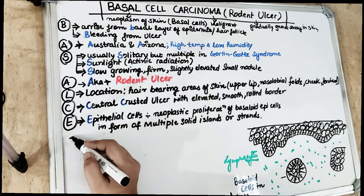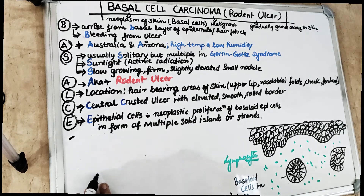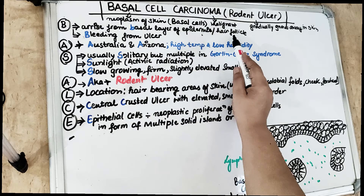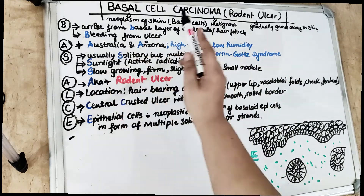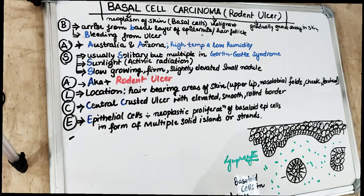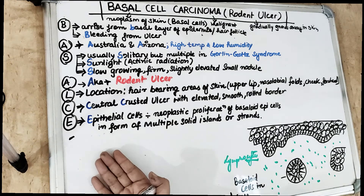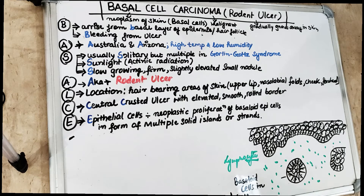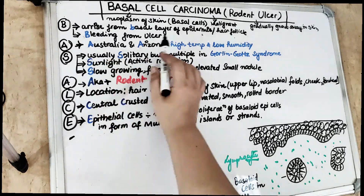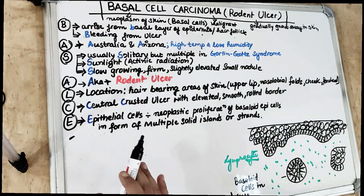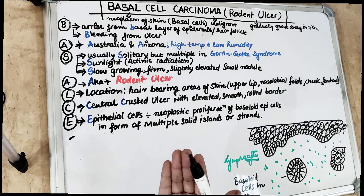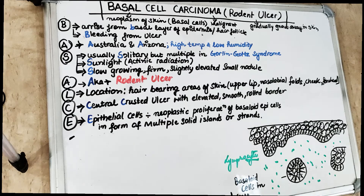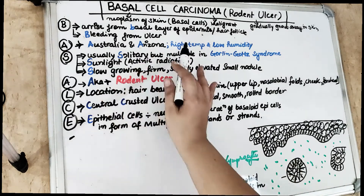So 'basal cell' — up to CE we are going to cover. The first B: basal cell carcinoma is a neoplasm of the skin, a disease arising from the basal layer of the epidermis or the hair follicle. The second B stands for bleeding from the ulcer. So what we see clinically is bleeding from the ulcer.